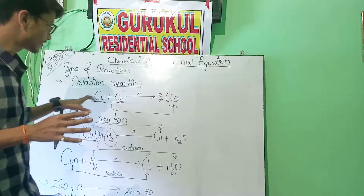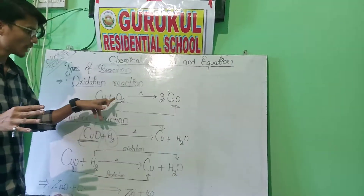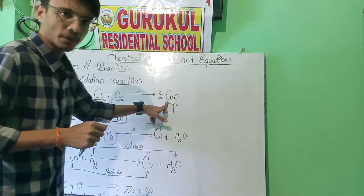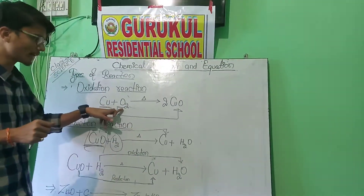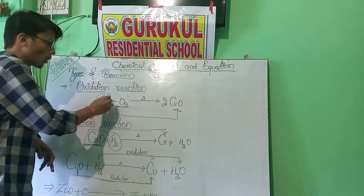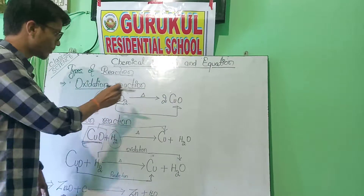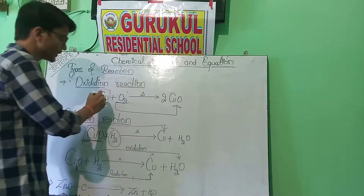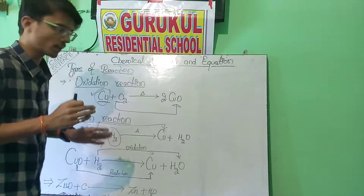Let's take one example. Here, copper is combining with oxygen and it is forming copper oxide. So we can say that this copper is oxidizing — copper is combining with oxygen and it forms copper oxide. So this copper is oxidizing here.